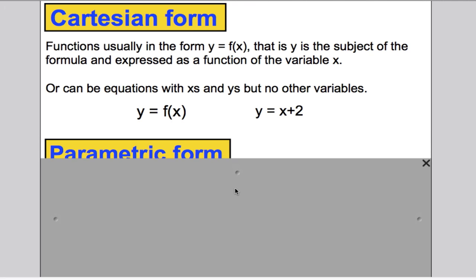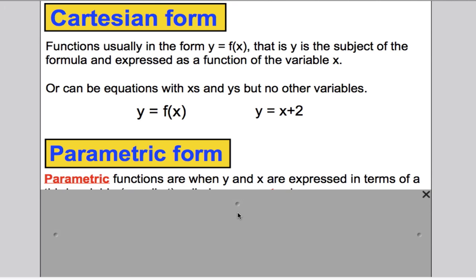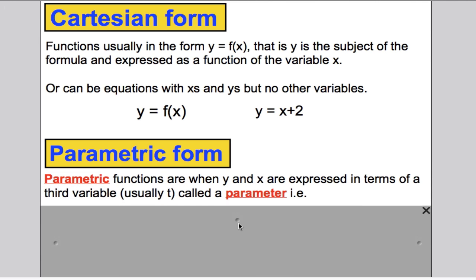And then we were introduced in the last video to parametric form. That is when our x and our y coordinates are expressed in terms of another variable, a third variable, usually t. And t is called the parameter.